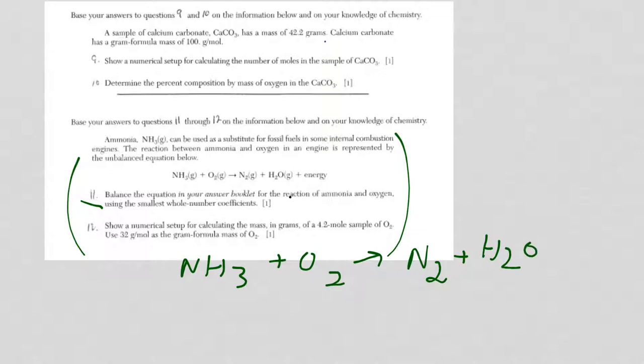I always just go back and forth. I have one nitrogen on the left, two on the right. I'll put a two in front of NH3. Now I have six hydrogens on the left, only two on the right. I'll put a three in front of H2O.